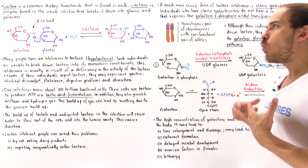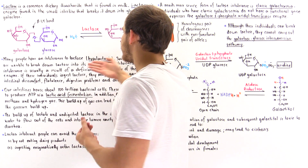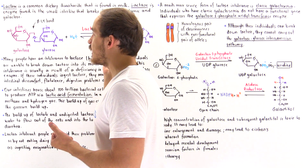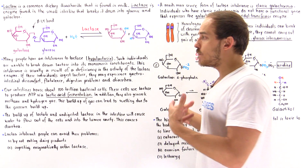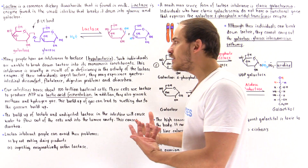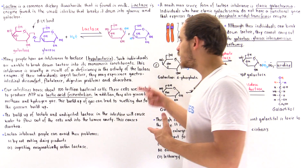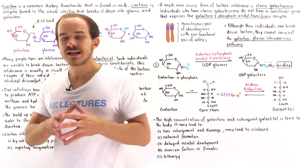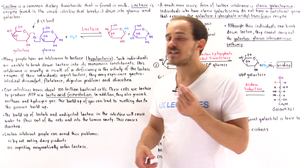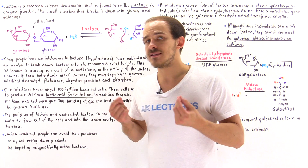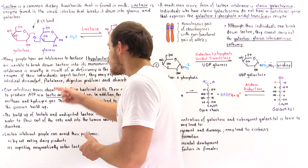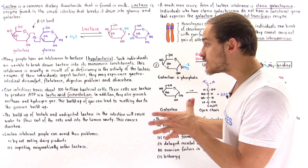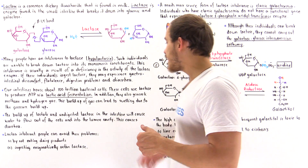The question is: why does the buildup of lactose actually lead to these problems? Well, in our gut we have many, many bacterial cells — in fact, we have 10 times as many bacterial cells as the cells in our body, over 100 trillion bacterial cells inside our gut, amounting to about 3 pounds of bacterial cells.